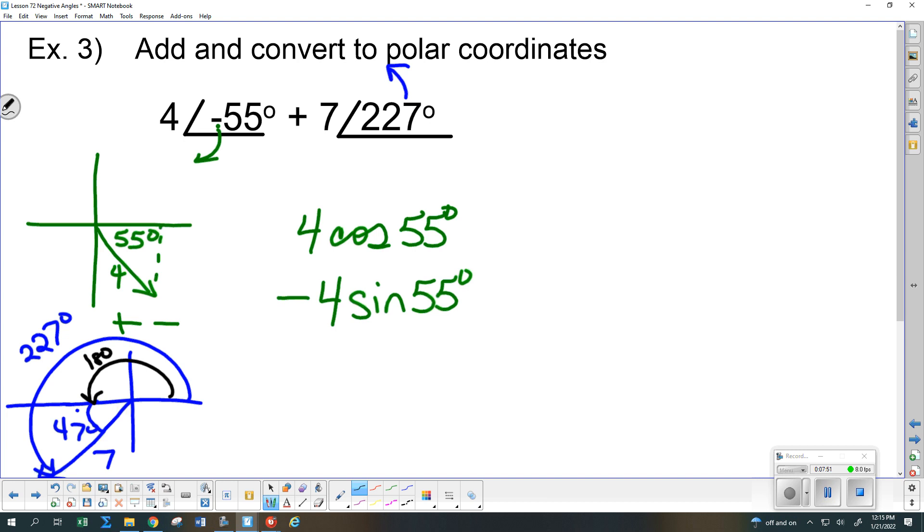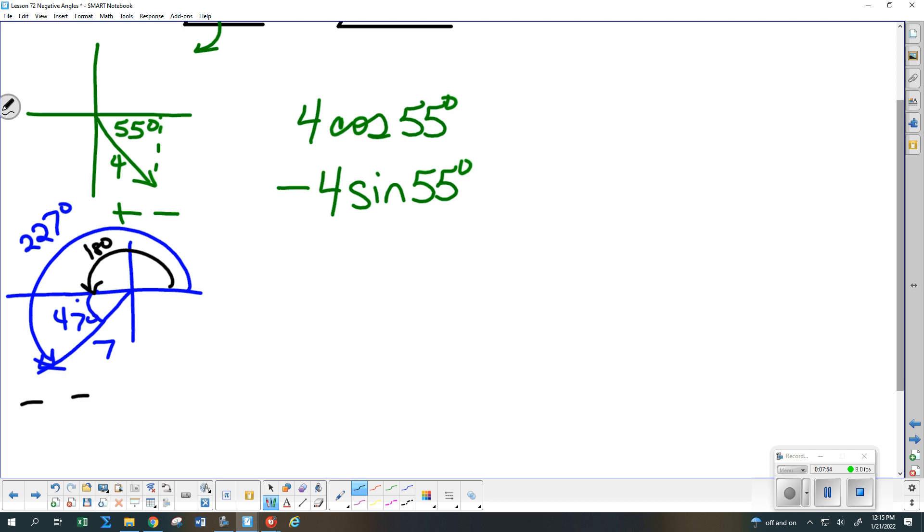That quadrant is minus minus, so I need minus 7 cosine 47 for the i-hat and minus 7 sine 47 for the j-hat. Do not be rushing ahead on this, because we need to do this together so I can go through how we're going to store this. Question? Um, I'm getting 47. I need to take the black plus this little one to equal 227. Everybody else good with 47?